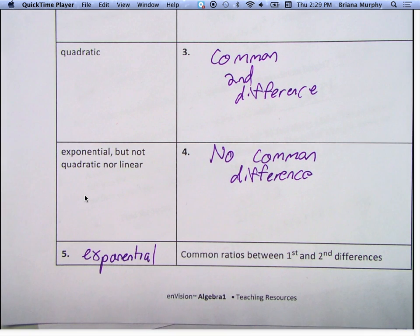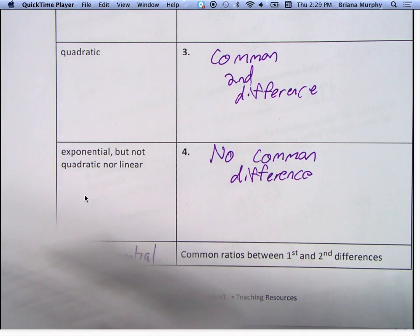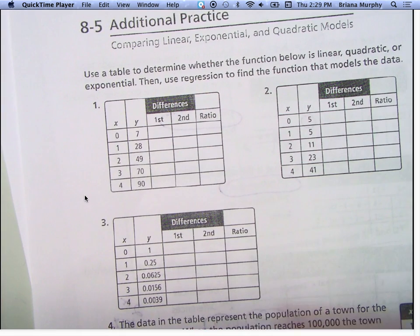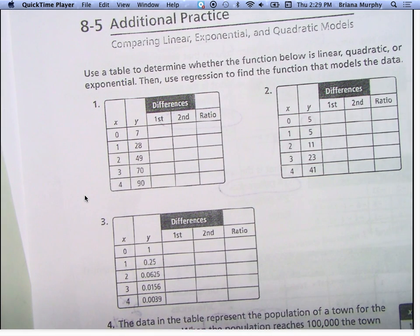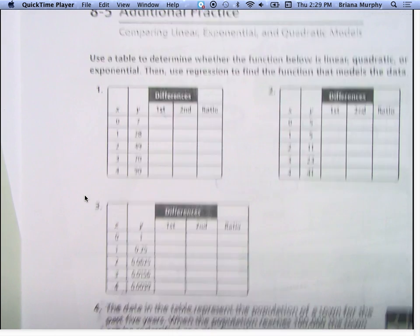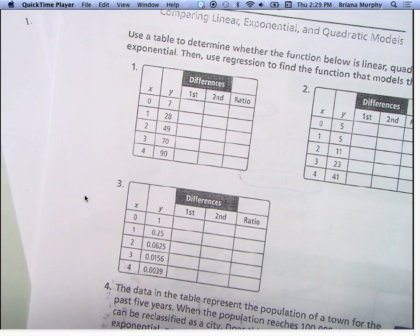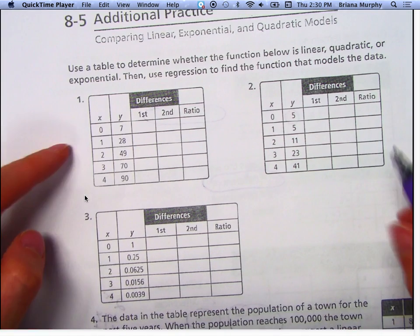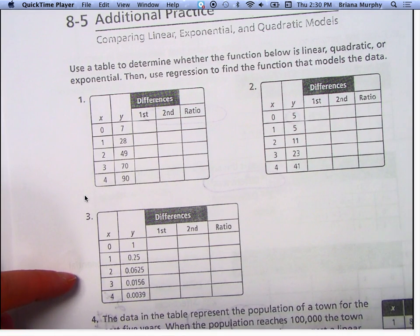You're going to do your homework for tonight — just six questions. For questions one, two, and three, you're going to find the first difference, second difference, or ratio, and then determine if it's exponential, quadratic, or linear.